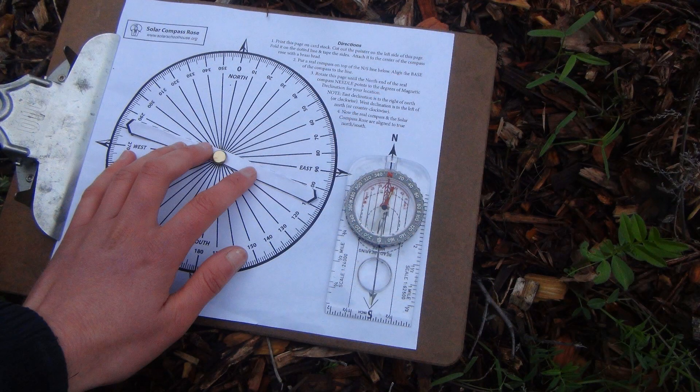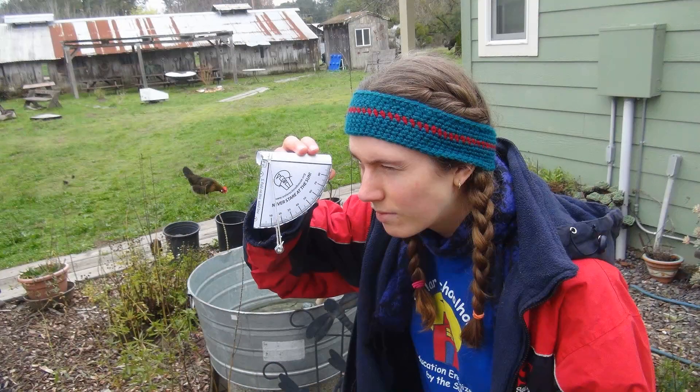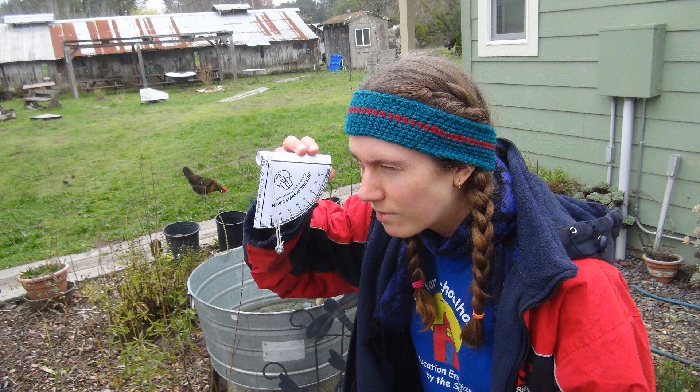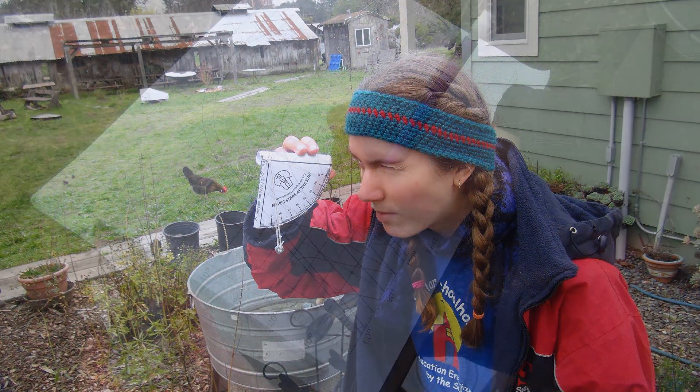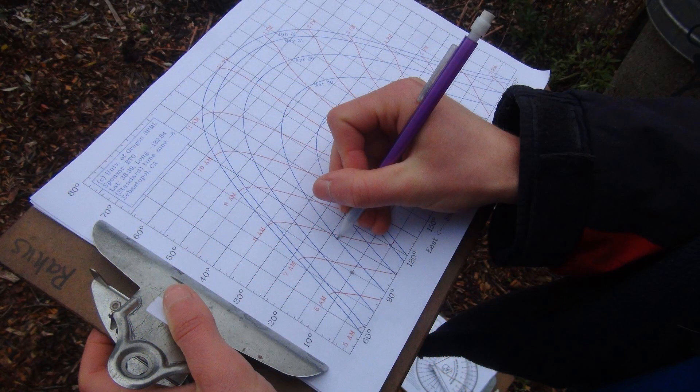Now, move the needle of the solar compass rose over 15 degrees to 105 and record the tallest shade obstacle there. Repeat this for every 15 degrees until reaching west at 270 degrees.